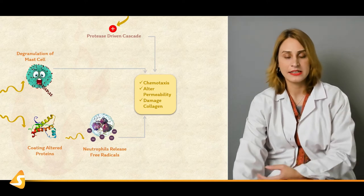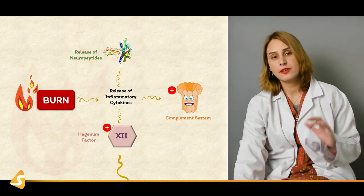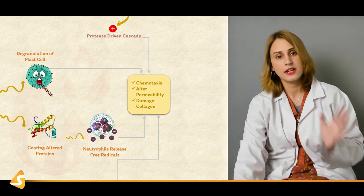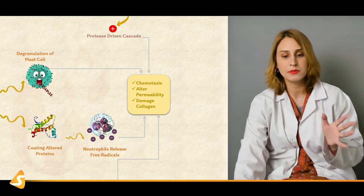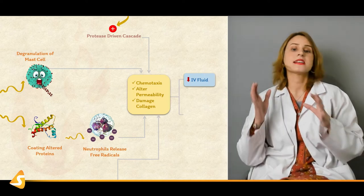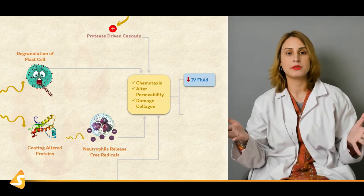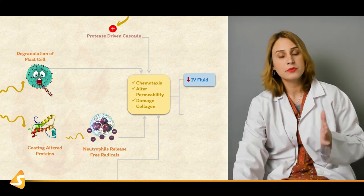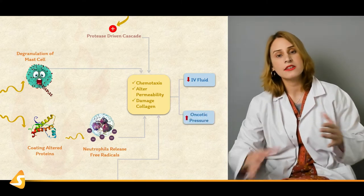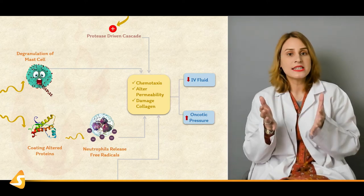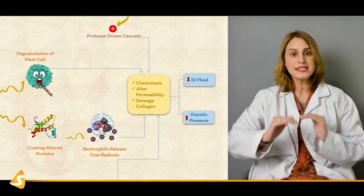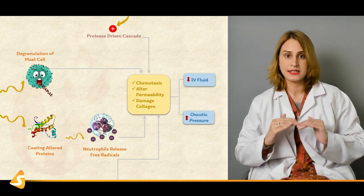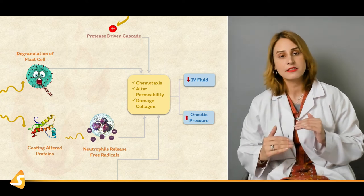The release of neuropeptides ultimately leads to the same endpoint: chemotaxis, permeability change, and collagen damage. When there is change of permeability, there is shift of fluid and proteins from intravascular space to extravascular space, leading to tissue edema. There would be decrease in intravascular oncotic pressure, but at the site of the burn injury in the extravascular space, the oncotic pressure would be increased because of the protein shifting from inside to outside — from the intravascular compartment to the extravascular compartment.